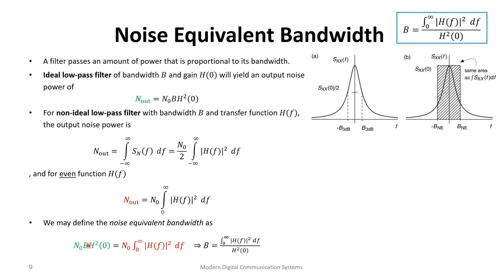Solving for B, the N₀ cancels, and the noise equivalent bandwidth is essentially comparing the area under |H(f)|² curve to the constant H₀². So given any filter, the noise equivalent bandwidth is the bandwidth of an ideal filter that would give the same output power.